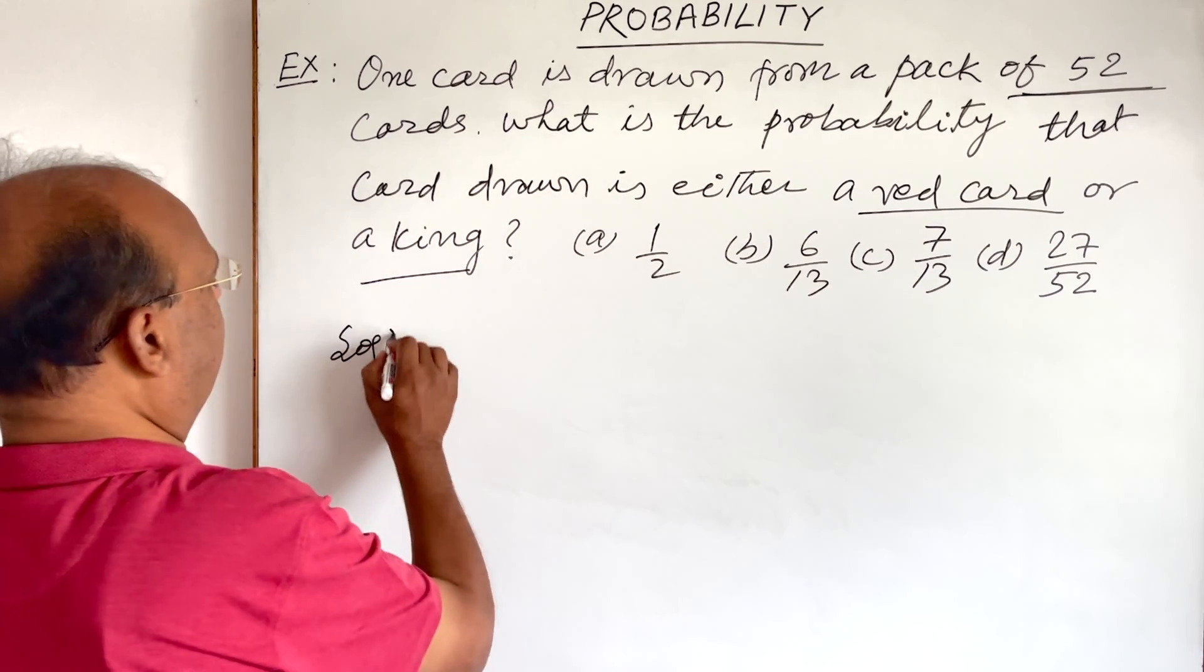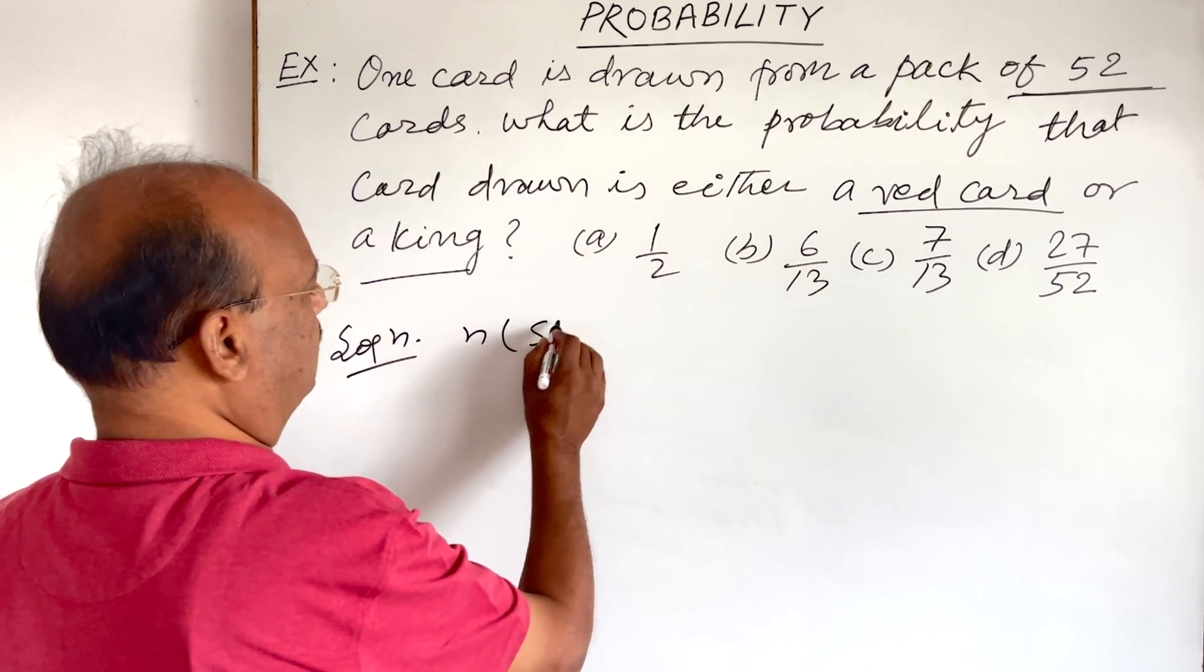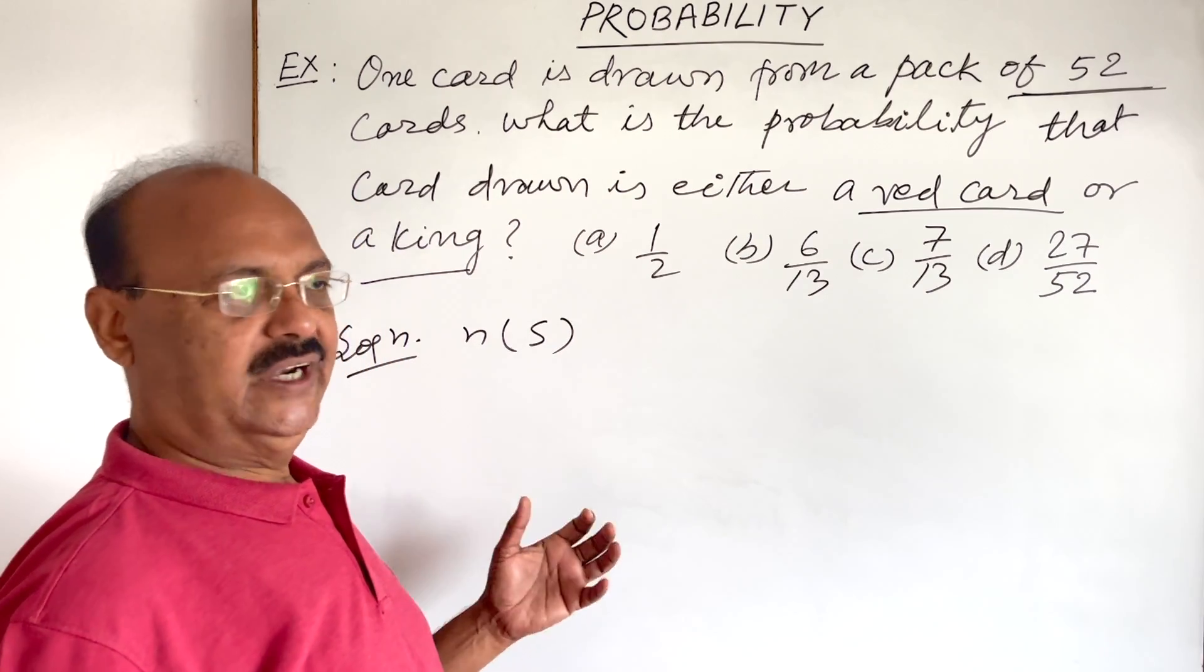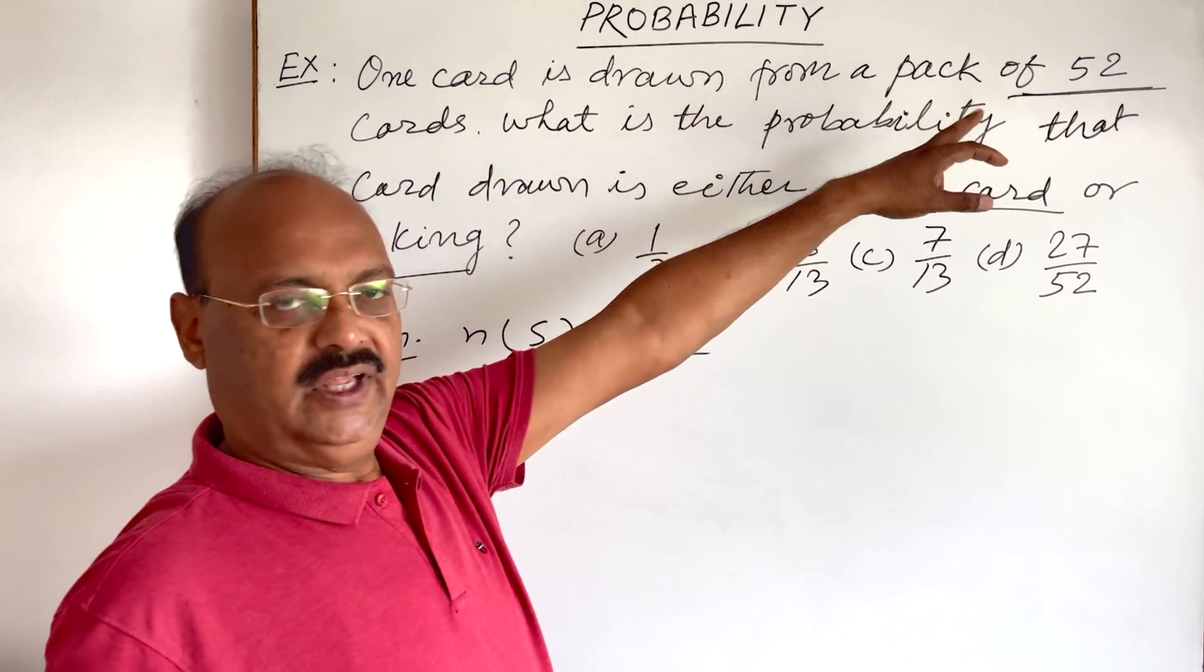So let us see the solution here. Total number of cards, that is n(S), number of elements in sample space, this is 52. Correct?